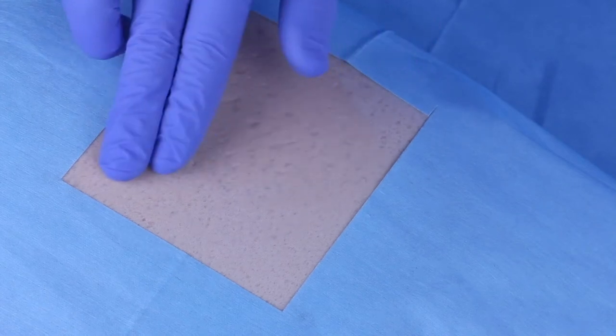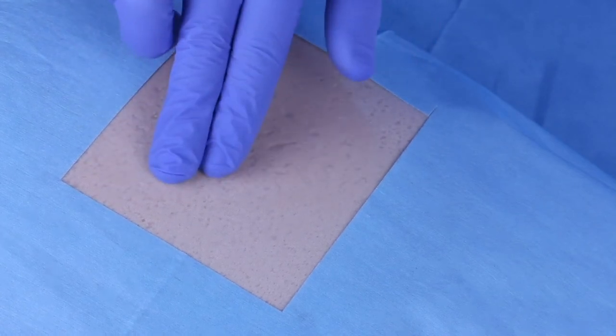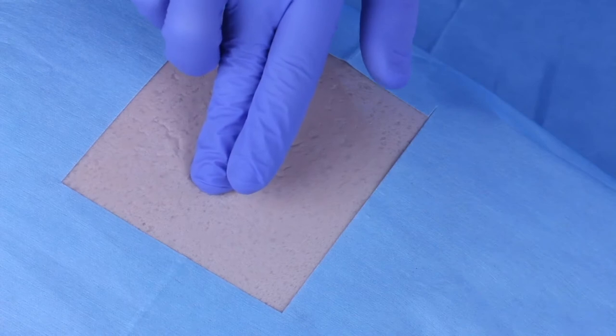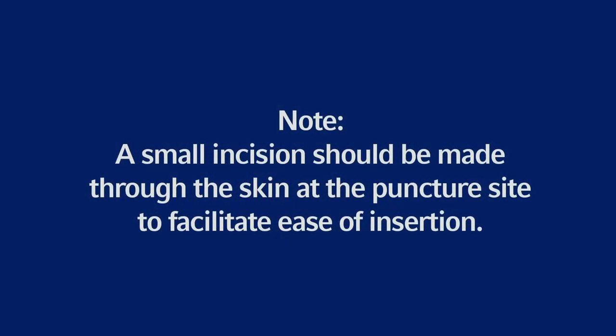Determine the optimum location for the insertion of the introducer by applying external pressure while viewing deflection of the peritoneum using the laparoscope. A small incision should be made through the skin at the puncture site to facilitate ease of insertion.